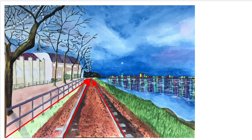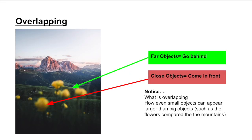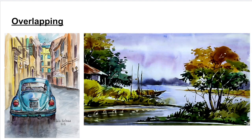As objects get further away from the viewer, they get smaller — this is an illusion of space. In overlapping, far objects go behind and close objects come in front. Notice what's overlapping. Small objects can sometimes appear bigger than large objects, depending on where they are placed on the page.